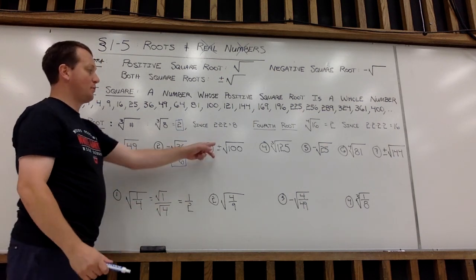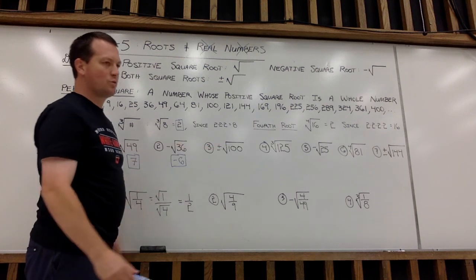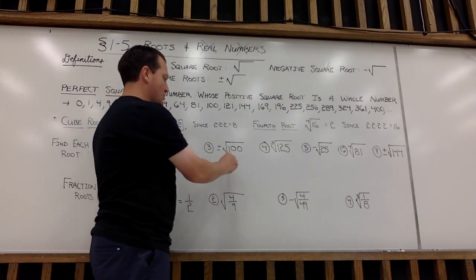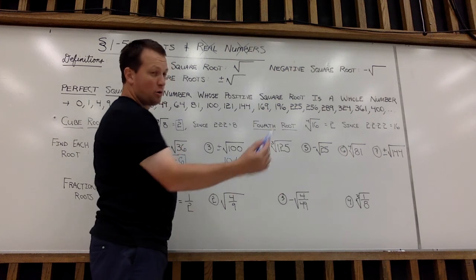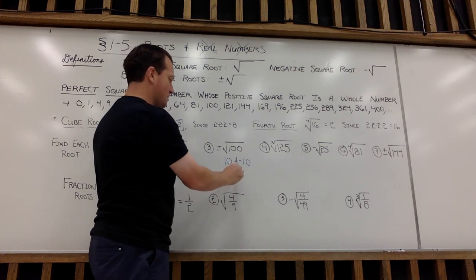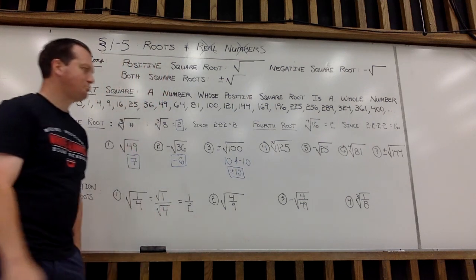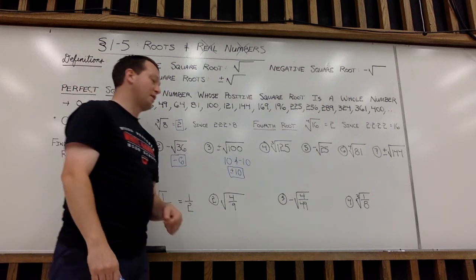Example 3, I want to take both the positive and negative square roots of 100. So you could say 10 and negative 10, or if you'd just like to write it as plus minus 10, either way is fine.